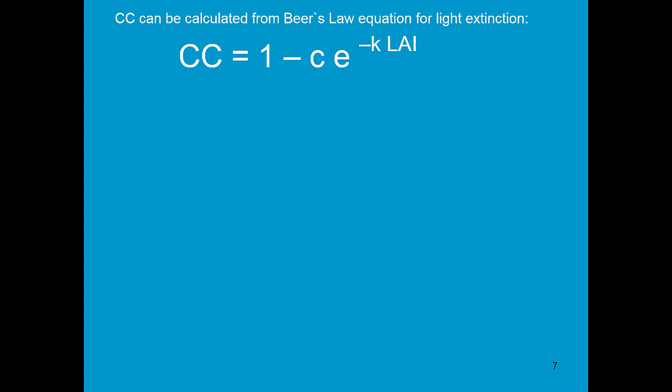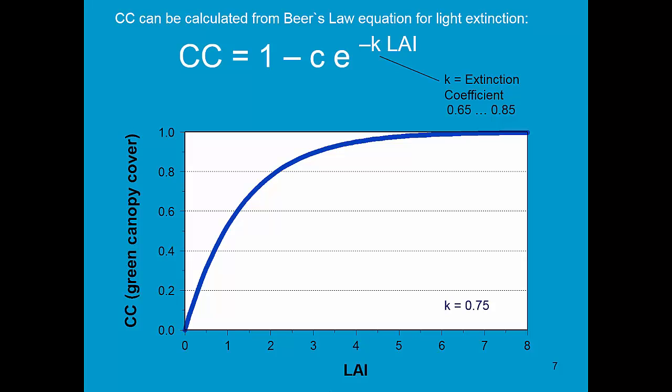The relationship between canopy cover and leaf area index is given by the Beer's Law equation for light extinction. It uses an extinction coefficient which varies between 0.65 and 0.85. Here we see the relationship for a coefficient of 0.75. We see that when the leaf area index is 3 or 4, that canopy cover is nearly complete.